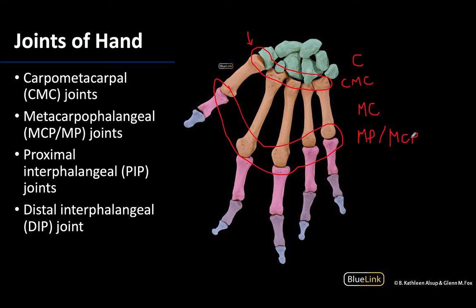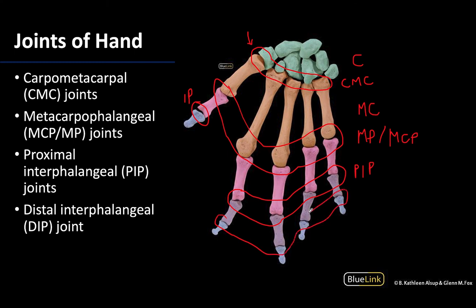Then we reach the interphalangeal joints — these are the joints between the phalanges. For digits two through five there are two sets of interphalangeal joints. In the first digit there is only one interphalangeal joint because there is no middle phalanx, so it is just referred to as the interphalangeal joint. In the other digits, the joint between the proximal and middle phalanges is called the proximal interphalangeal joint or PIP joint, and the joint between the middle and distal phalanges is called the distal interphalangeal joint or DIP joint. All interphalangeal joints are hinge joints, so they are only capable of flexion and extension.